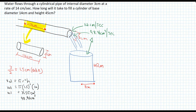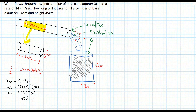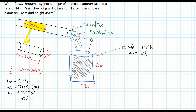Next we need to find how long it will take to fill the entire cylinder at the bottom, given that roughly 98.96 centimetres cubed is flowing in per second. First we find the volume of that large cylinder using pi r squared h, with a radius of 7 and a height of 45 centimetres.